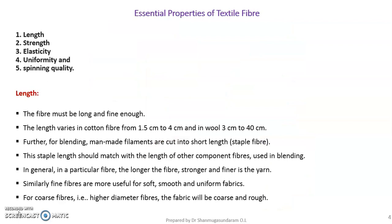Now coming to the main topic: the essential properties of a textile fiber. There are five essential properties: the first is length, second is strength, third is elasticity, fourth is uniformity, and fifth is spinnability.